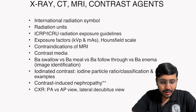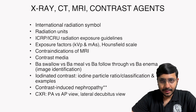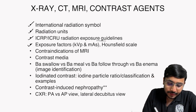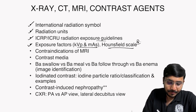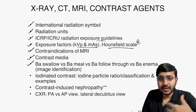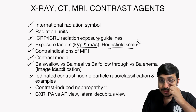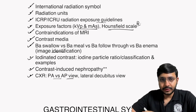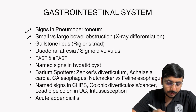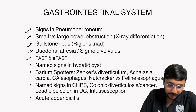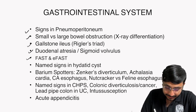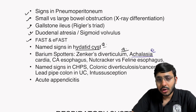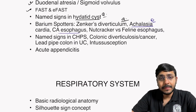Now for important topics: in general radiology — X-ray, CT, MRI, and contrast agents — revise international symbols of radiation, radiation units, radiation exposure guidelines by ICRP, mAs versus kVp, Hounsfield units (a question was recently asked), contraindications to MRI, contrast media, barium images, iodinated contrast classifications, contrast-induced nephropathy, PA versus AP view on chest X-ray, and lateral decubitus view. For the GI system: signs of pneumoperitoneum, small versus large bowel obstruction, gallstone ileus, duodenal atresia, sigmoid volvulus, FAST versus eFAST, named signs of achalasia, Zenker's diverticulum, bird beak and rat tail signs in esophagus.